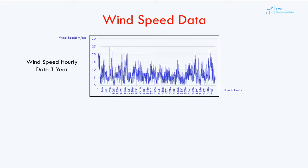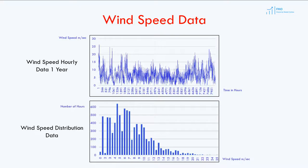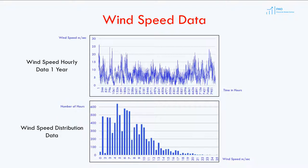The next step is to create a histogram from the wind speed. On the vertical axis, we have the number of hours, and the horizontal axis measures the wind speed. You can see that most of the wind is happening between 2 and 10 meters per second.